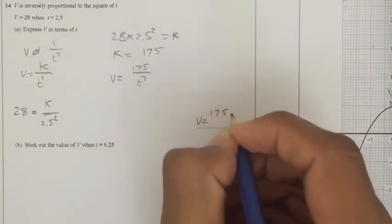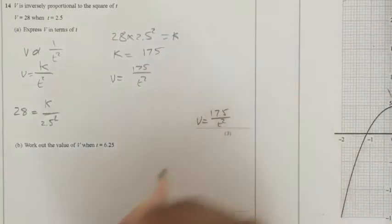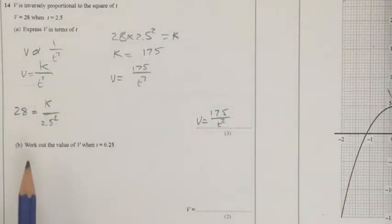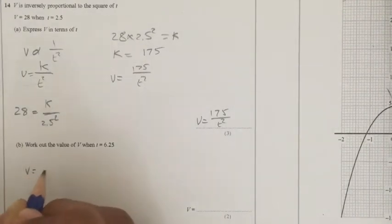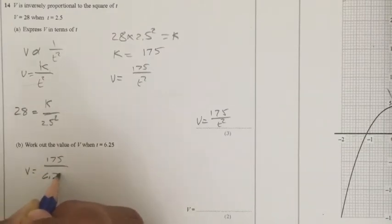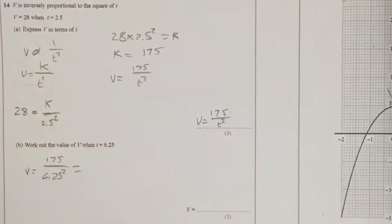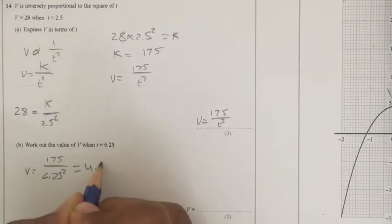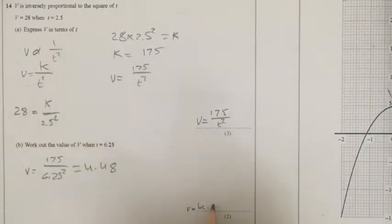So V equals 175 over T squared. Work out the value of V when T is 6.25. So V equals 175 over 6.25 squared, which equals 4.48.